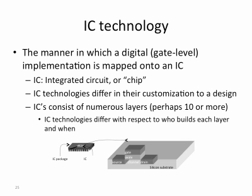Now we move on to the second technology: IC technology. By IC technology, we refer to how the gate-level implementation is mapped onto an integrated circuit, or chip. IC technologies differ in their customization to a design. ICs consist of numerous layers — perhaps even 10 or more. IC technologies differ with respect to which layers are built and when. So apart from programming the chip, what gate-level functionalities can we change or customize? Some chips you cannot change at all, but some chips you can change a lot.